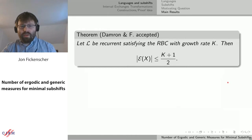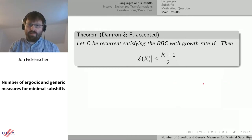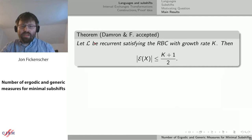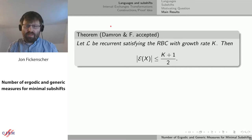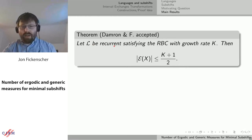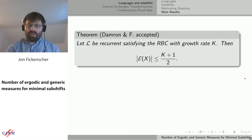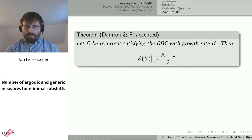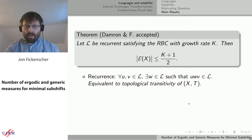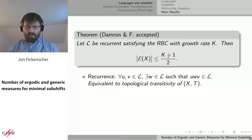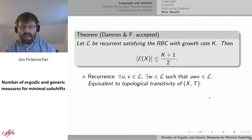This is work with Michael Dameron from Georgia Tech, recently accepted into the Ergodic Theory and Dynamical Systems journal. If I have a language that's recurrent and satisfies this regular bispecial condition with its growth rate, then the number of ergodic measures is bounded from above by (k+1)/2. Numerically this is a better bound than the previous one, since the linear factor is k/2 versus k. Recurrence means that if I have two words in the language, there's a long enough word that has u as a prefix and v as a suffix — dynamically equivalent to topological transitivity.